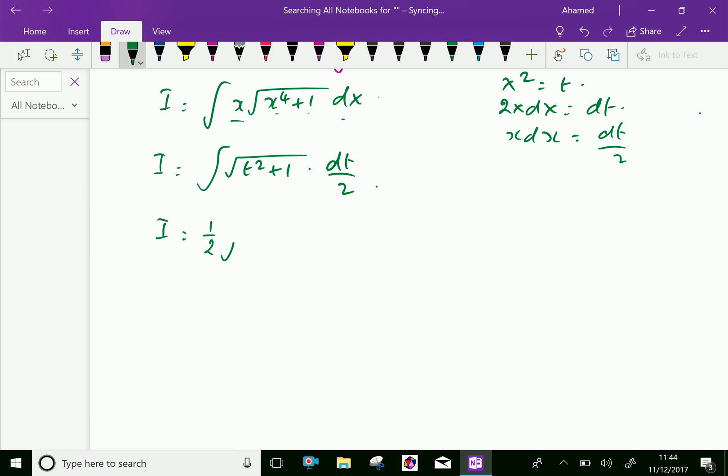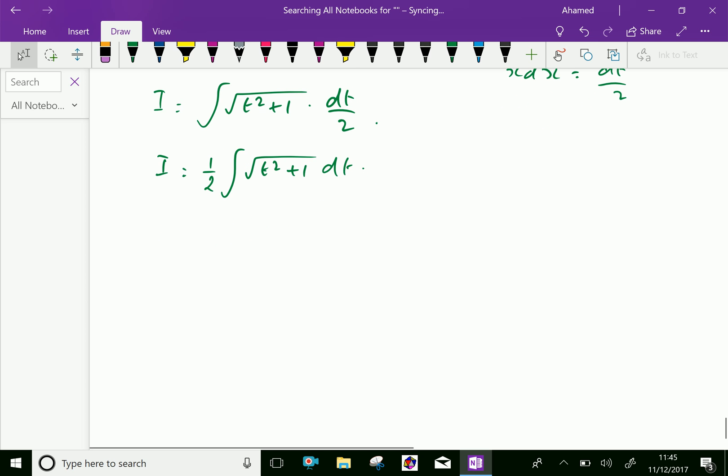I equals one-half times the integral of square root of t squared plus 1, dt. We will apply the standard result for this.